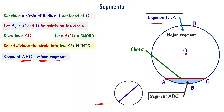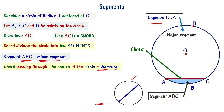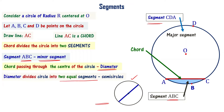Now look at this figure. You have a chord passing through the center of the circle. The chord passing through the center of the circle is called the diameter. The diameter divides the circle into two equal segments called semi-circles.